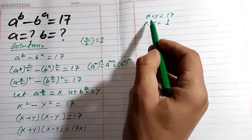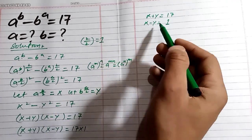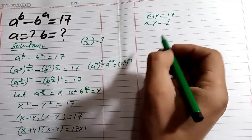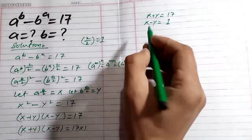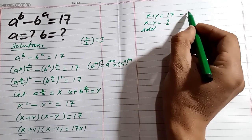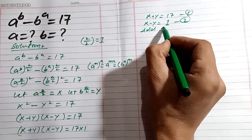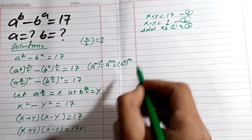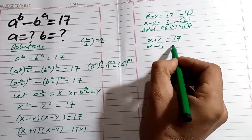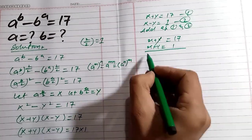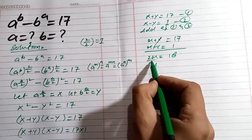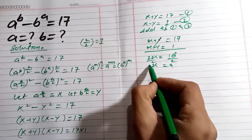We can solve this system using the substitution method, elimination method, matrix inversion, or Cramer's rule. We will use the elimination method. Adding equation 1 and equation 2: (x + y) + (x − y) = 17 + 1, giving 2x = 18. Dividing both sides by 2, we get x = 9.